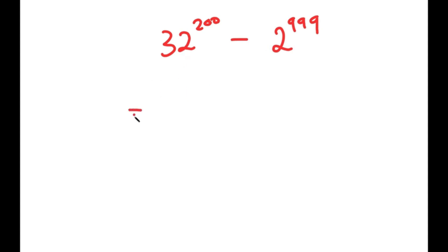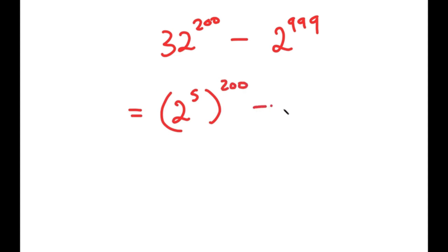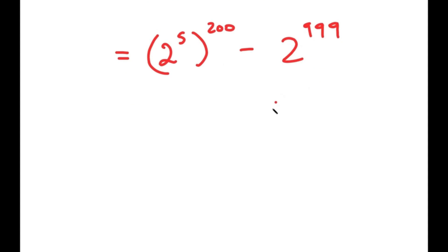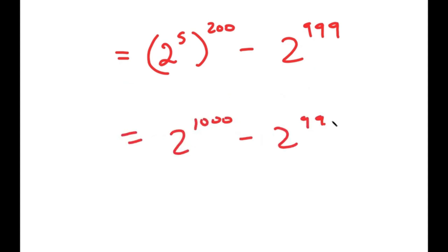To solve this, I'm going to first rewrite 32 as 2 to the power of 5. So I get 2 to the power of 5 to the power of 200 minus 2 to the power of 999. This turns into 2 to the power of 1000 minus 2 to the power of 999, because the 5 and 200 multiply.